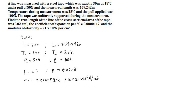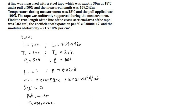Since the tape was uniformly supported during the measurement, there will be no sag, so the sag correction is equal to zero. There is a pull applied during measurement of 100 newtons, so we need to find the pull correction. Also, there is a variation of temperature from the standard 18 degrees centigrade to 28 degrees centigrade, so we also need to find the temperature correction.